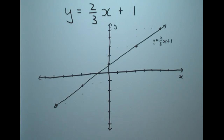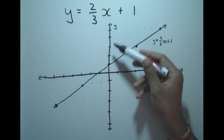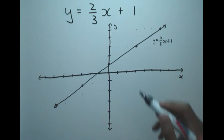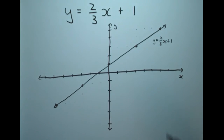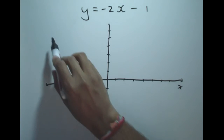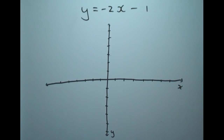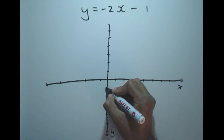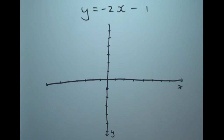Now I'll do an example with a negative gradient so you can see the rise and run method works in the opposite direction. Remember when drawing graphs you need to draw the line long enough to see both your y-intercept and your x-intercept. Let's look at y = -2x - 1 using the rise and run method. The gradient is -2, so it's a negative graph going in the opposite direction, and the y-intercept is -1.